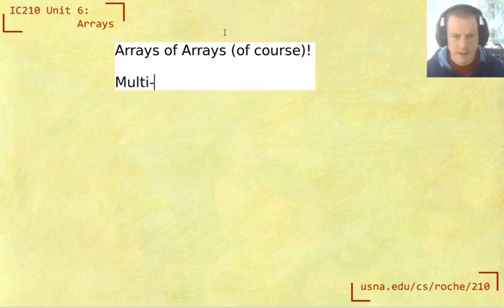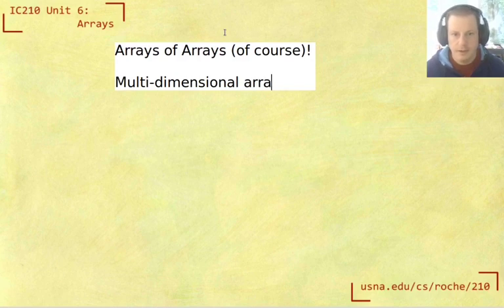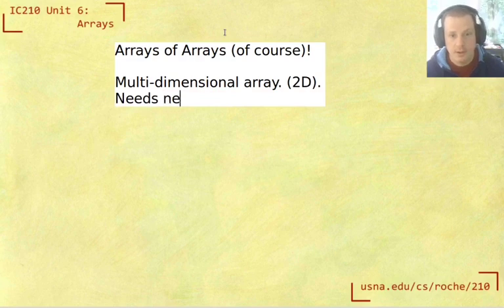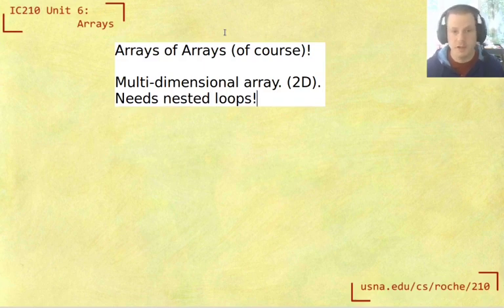So this is called a multi-dimensional array. And in particular, if we have arrays of arrays, then it's going to be two dimensional. So we're going to have to have nested loops in order to process anything, because the structure of our code is going to have to follow the structure of the data that we're working on.